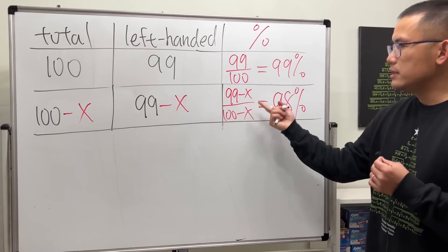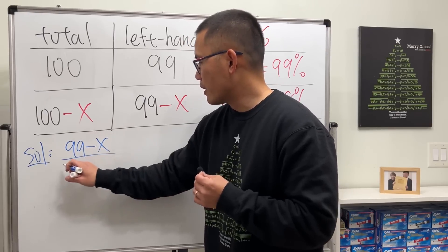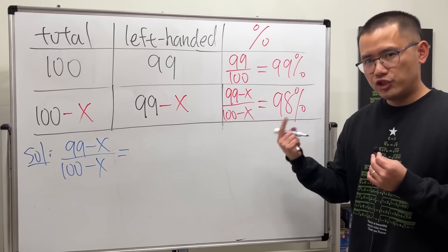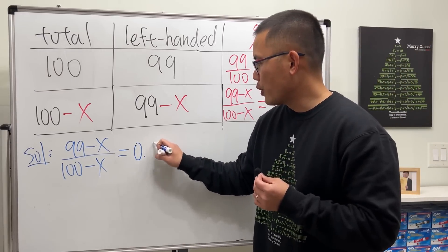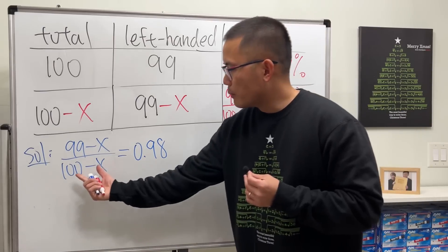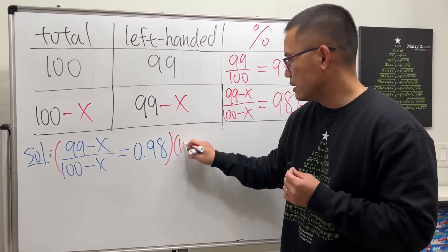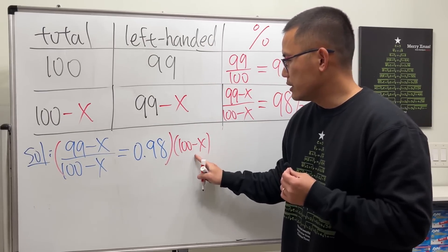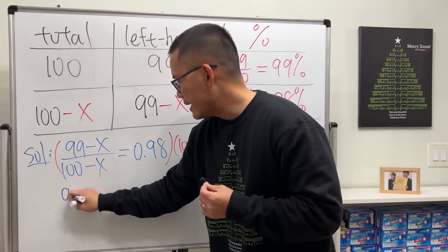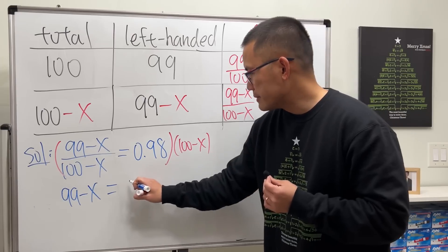Now we can just solve this equation. (99-x)/(100-x) has to be 98%. Change that to a decimal, we get 0.98. To solve this equation, we can multiply the denominator to both sides. The denominator cancels, and then we will just have 99 minus x equals this times that.